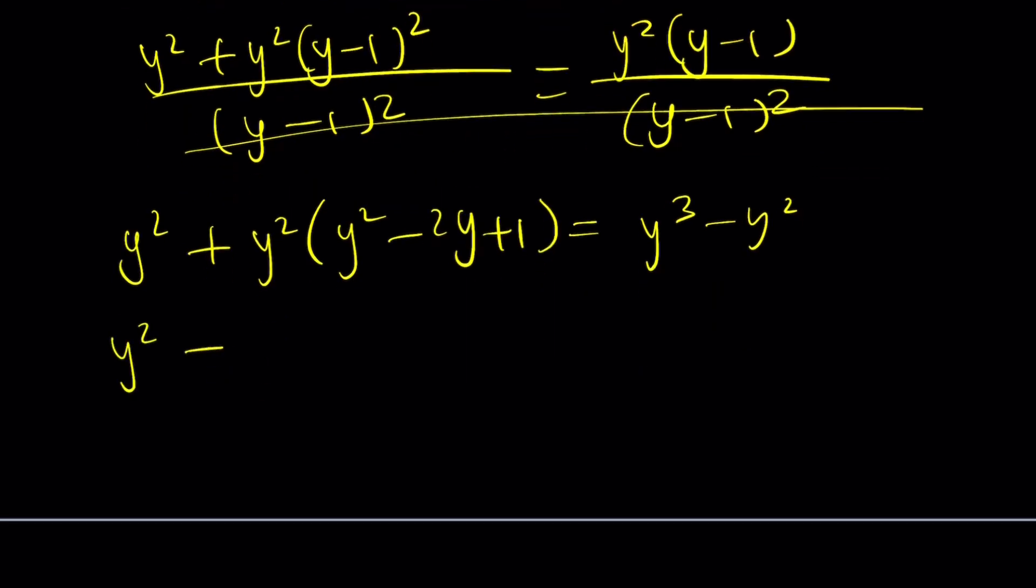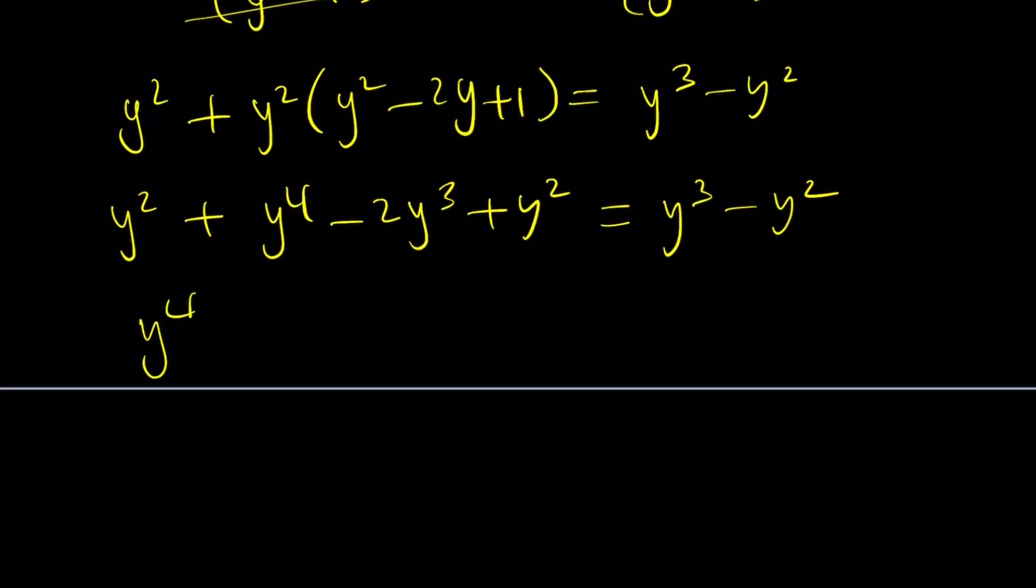And this is y squared plus y to the fourth minus 2y cubed plus y squared equals y cubed minus y squared. Finally, putting everything on the same side, we're going to get y to the fourth minus 3y cubed plus 3y squared. Because we have y squared plus y squared plus y squared, of course when you add it's going to be positive. And set it equal to 0.